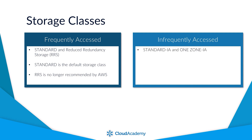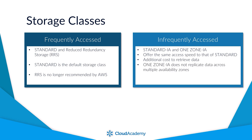For data that is accessed infrequently, we can look at Standard IA and One Zone IA. Although they offer the same speed of access as Standard, these infrequent access storage classes charge an additional cost to retrieve and access the data — so the data in these classes is typically long-lived and requires very little need to be accessed. The difference between One Zone IA and Standard IA is durability: One Zone IA does not replicate across multiple availability zones, offering only 99.5% availability, and should only be used for data that can be reproduced. One Zone IA is the cheapest of the two due to its single availability zone limitation.